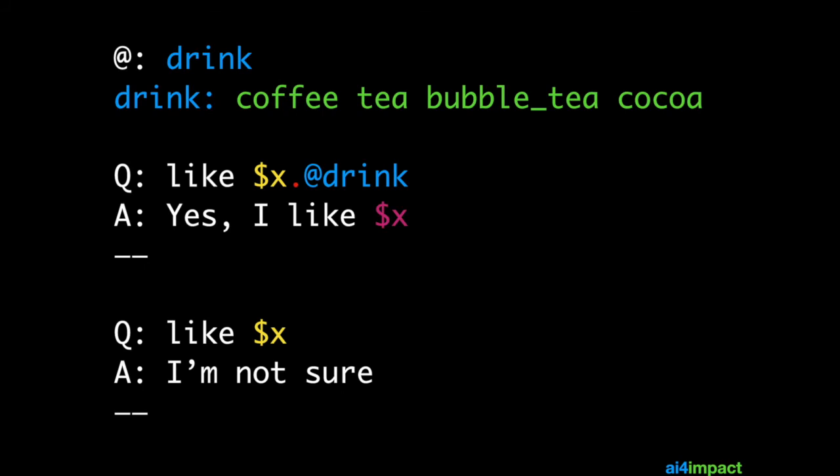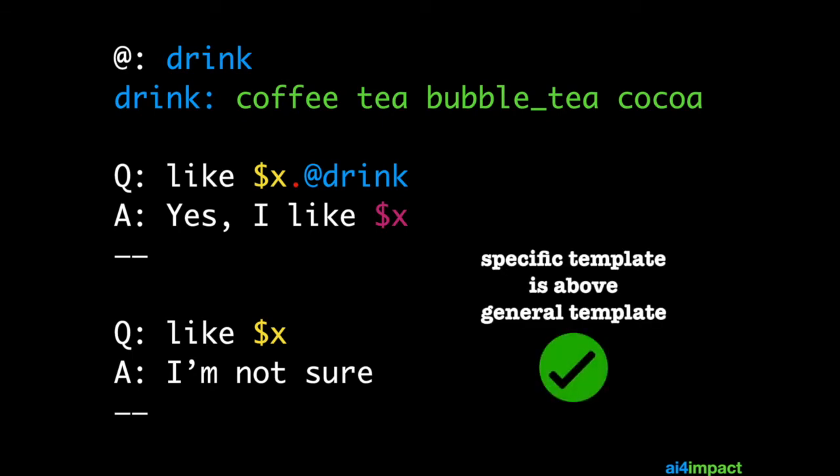So in this listing I have got two templates, one which is more specific because it will only match drinks. The second template uses an ordinary reference and therefore will match anything not just a drink. So again specific templates must be above a general template.